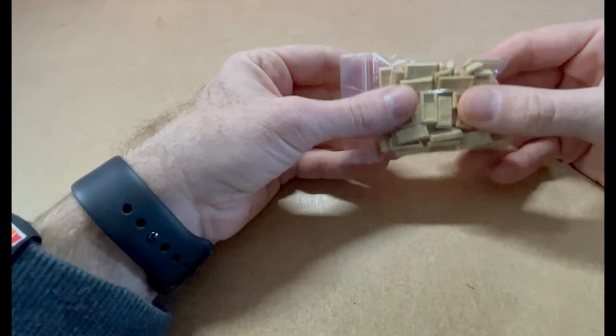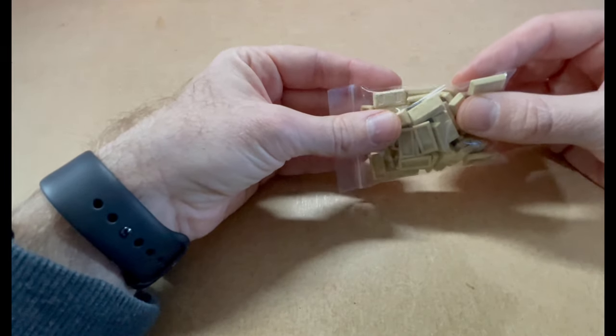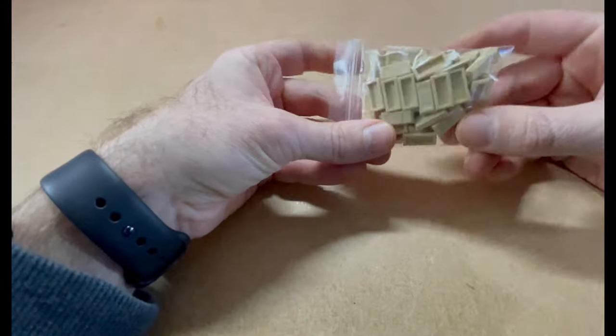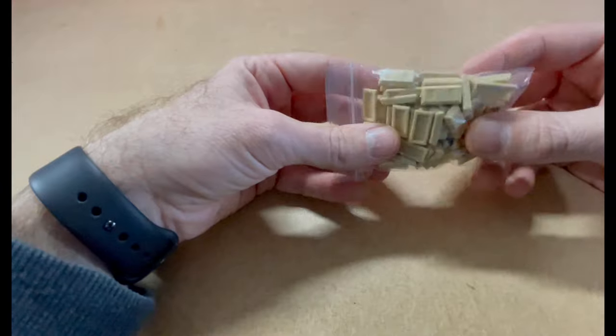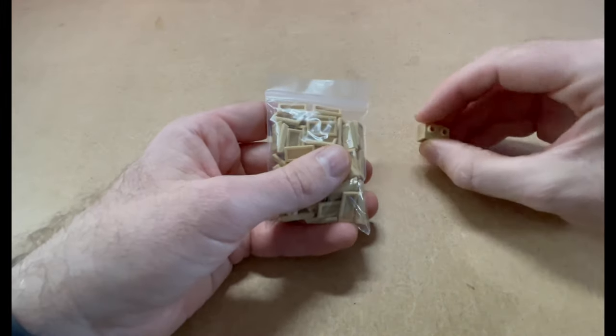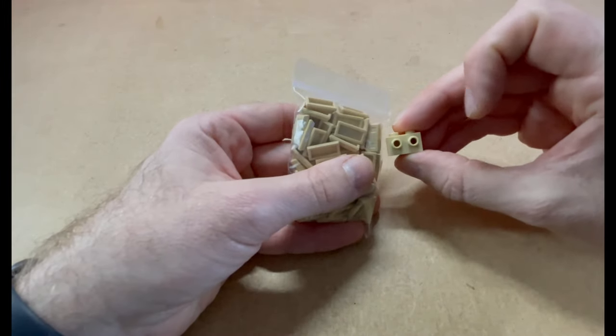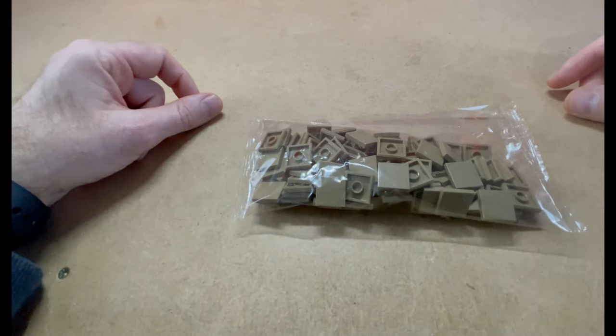Also I got these gold bullion modified tiles in tan, and that's just for a feature around the base of a building that I want to do. I just want to put them, stack these up and put them on there. So I think that'll look quite nice.